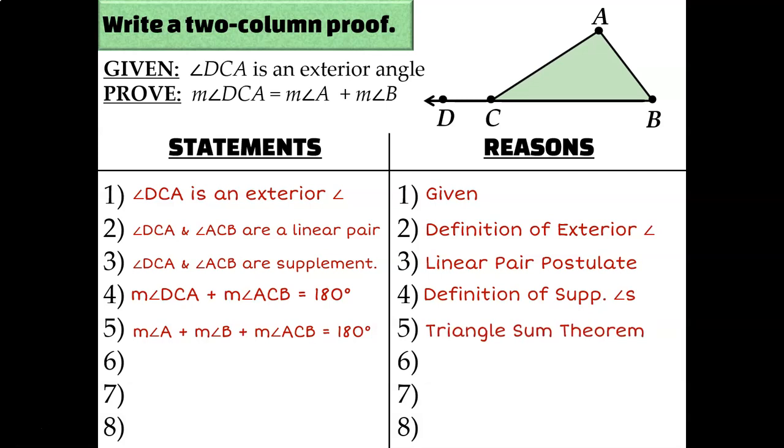Well, now I have two things that equal 180. If they both equal 180, then don't they equal each other? So I could write this. The measure of angle A plus the measure of angle B plus the measure of angle ACB is equal to the measure of angle DCA plus the measure of angle ACB.